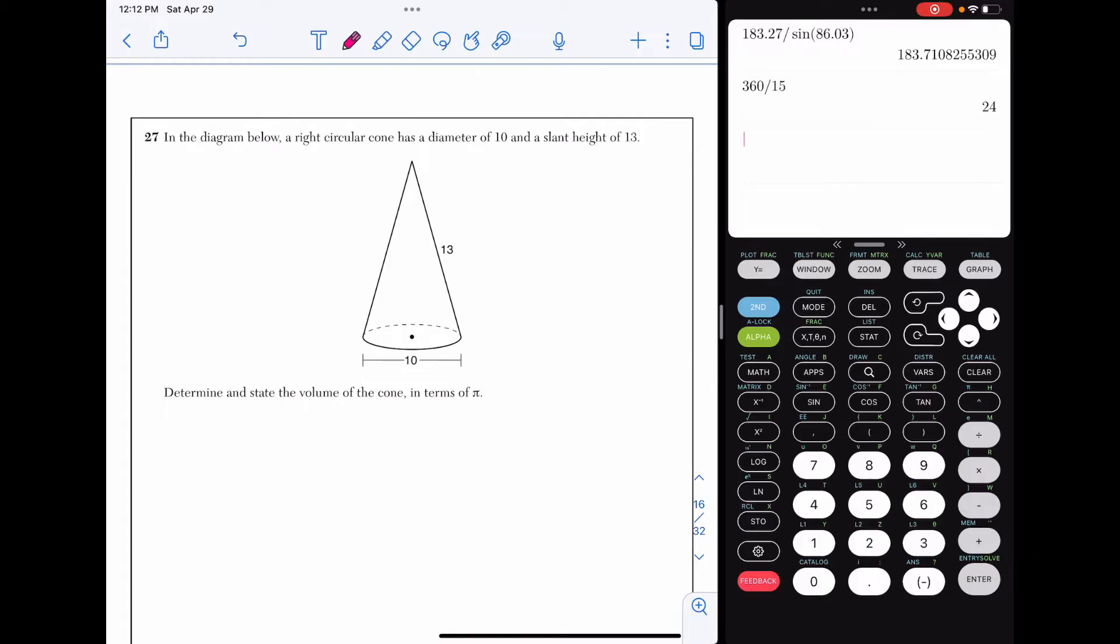Question 27. In the diagram below, a right circular cone has a diameter of 10 and a slant height of 13. Determine and state the volume of the cone in terms of pi. You would definitely go right to your reference sheet for this to grab the volume formula. Here it is.